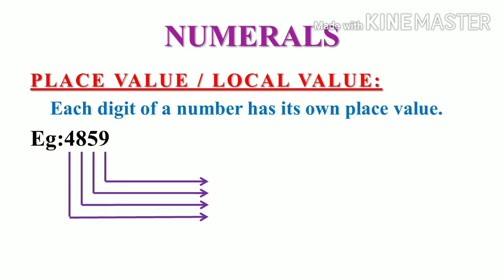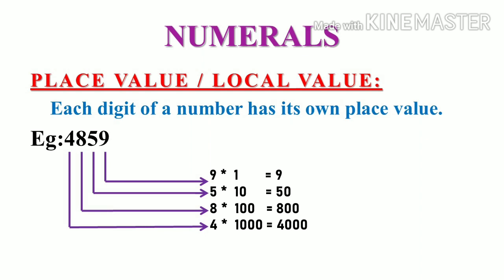We are going to multiply the digit with its position value. For example, nine is placed in units place so it has to be multiplied with one. Five in tens place so it is multiplied with ten. Eight is placed in hundreds place, we have to multiply it with hundred. And for four, we have to multiply with thousand because it is placed in thousands place.